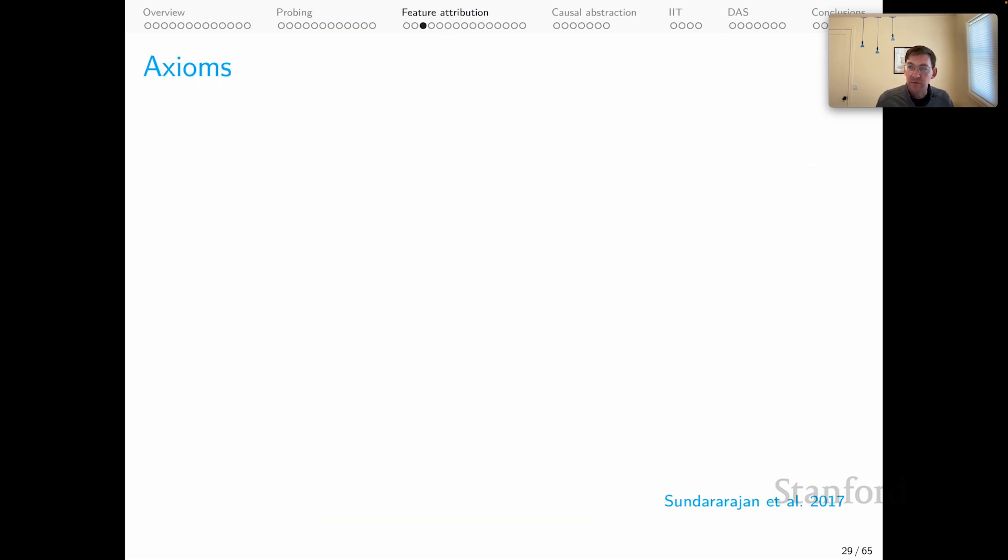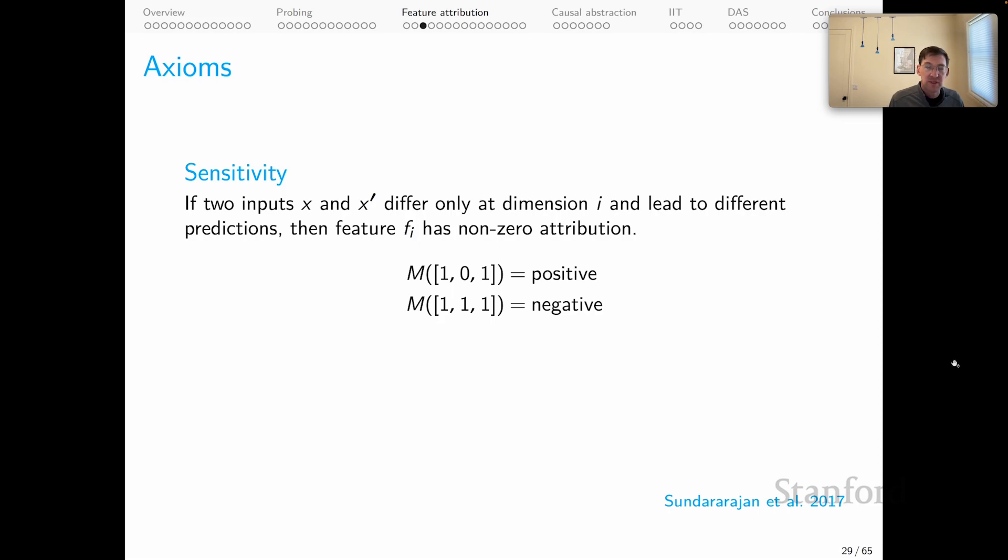Now, I love the integrated gradients paper Sundararajan et al. 2017 because of its method, but also because it offers a really nice framework for thinking about attribution in general, and they do that in the form of three axioms. I'm going to talk about two of them, and of the two, the most important one is sensitivity. This is very intuitive. The axiom of sensitivity for attribution method says if two inputs x and x prime differ only at dimension i and lead to different predictions, then the feature associated with dimension i has non-zero attribution.